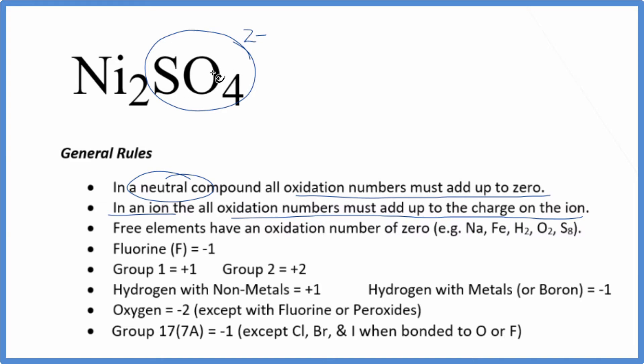So at this point, we could set an equation up. We could just say nickel, that's x, and we know everything adds up to zero. 2 times x, that's 2x. We have this 2 minus. So minus 2 equals 0. 2x, add 2 to each side, and we get 2 divided by 2, x equals 1. So the oxidation number on each nickel atom here is plus 1.